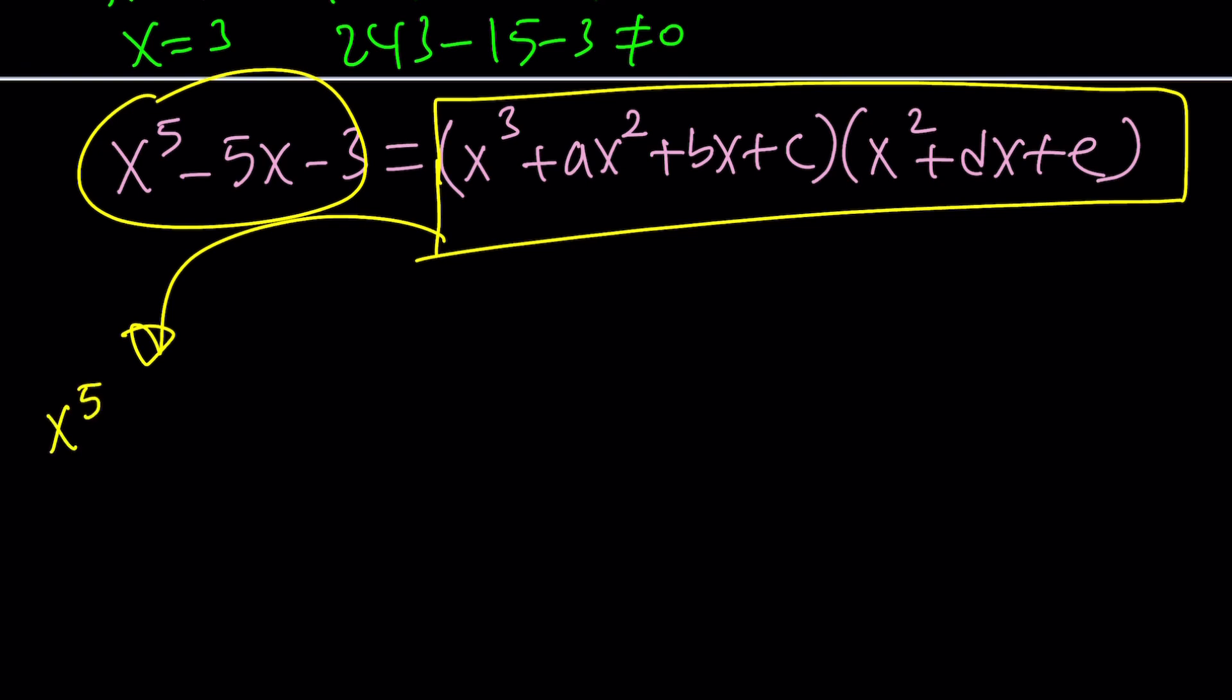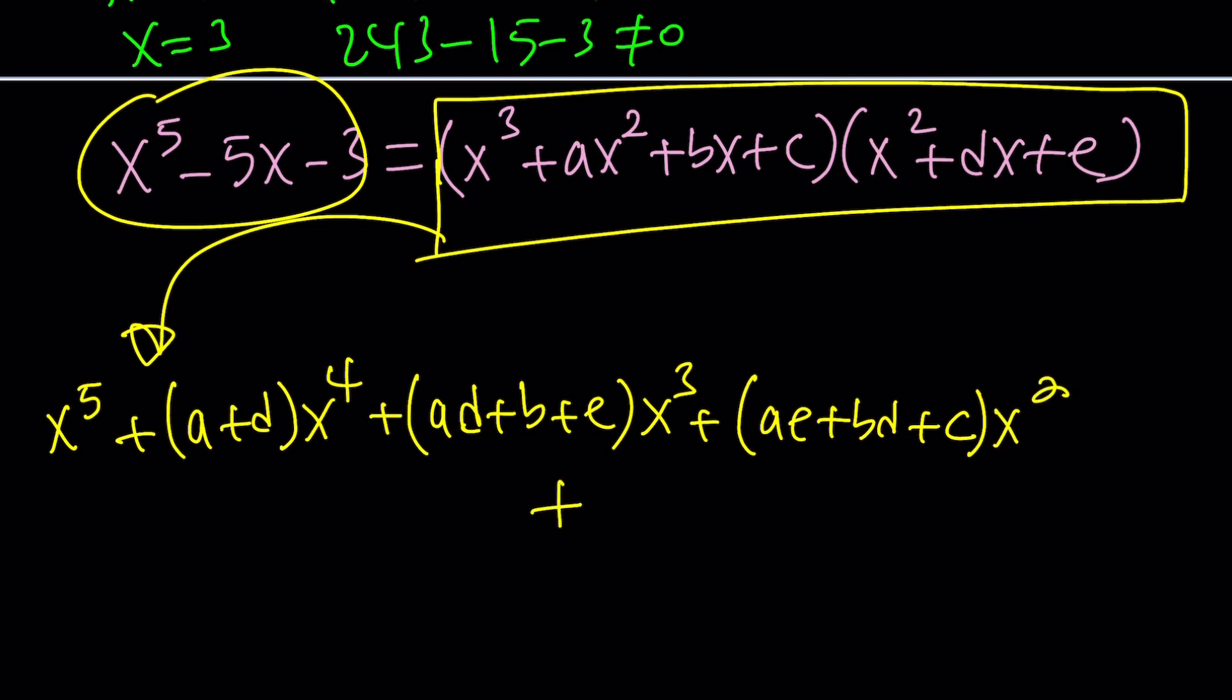When you distribute and rearrange the terms, you're going to get x to the fifth plus (a + d) times x to the fourth plus (ad + b + e) times x to the third power plus (ae + bd + c) times x squared. It's not going to fit here, so I have to use the second line plus (be + cd) multiplied by x and finally plus ce.